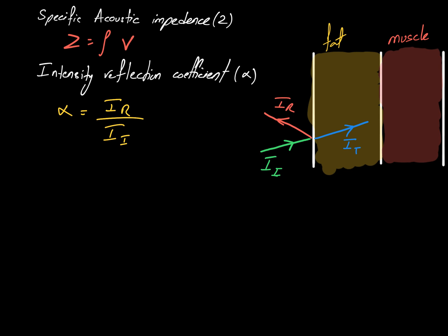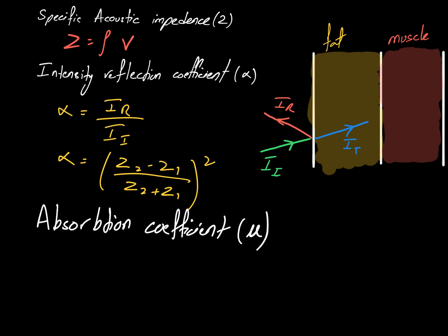Alpha can also be found using the formula: alpha equals the difference between the two Z values divided by the sum of the two Z values, the whole thing squared. In simple words, the larger the difference between the two Z values of the mediums — for example air and fat, or fat and muscle — the greater the fraction of reflected intensity.